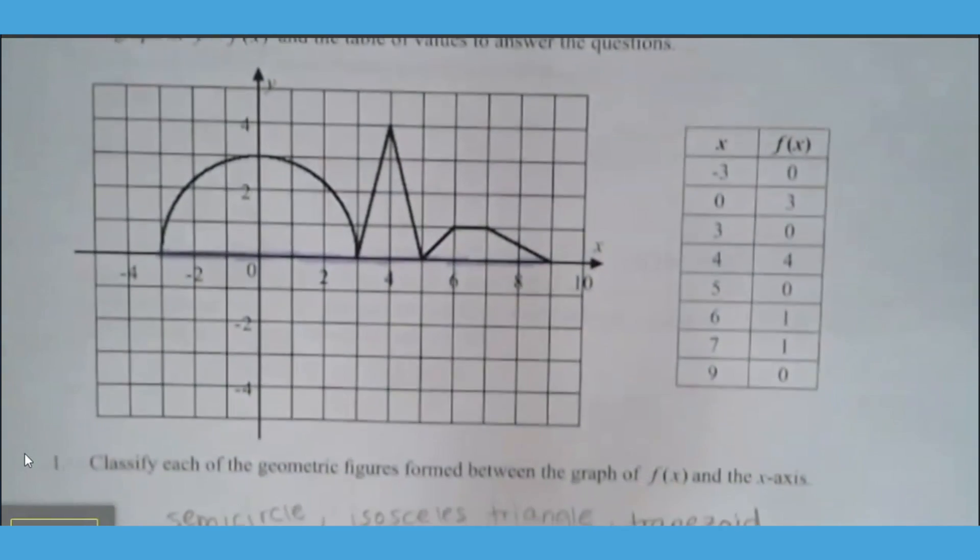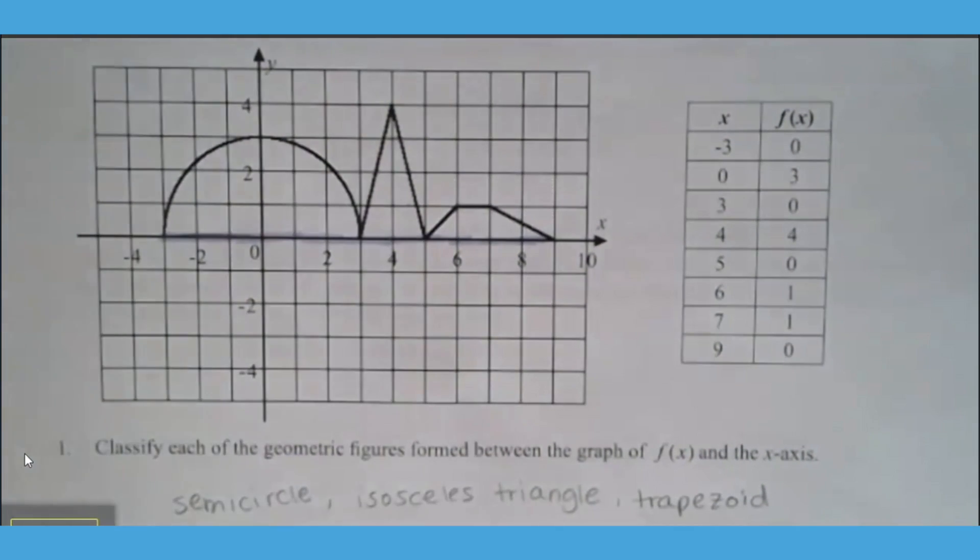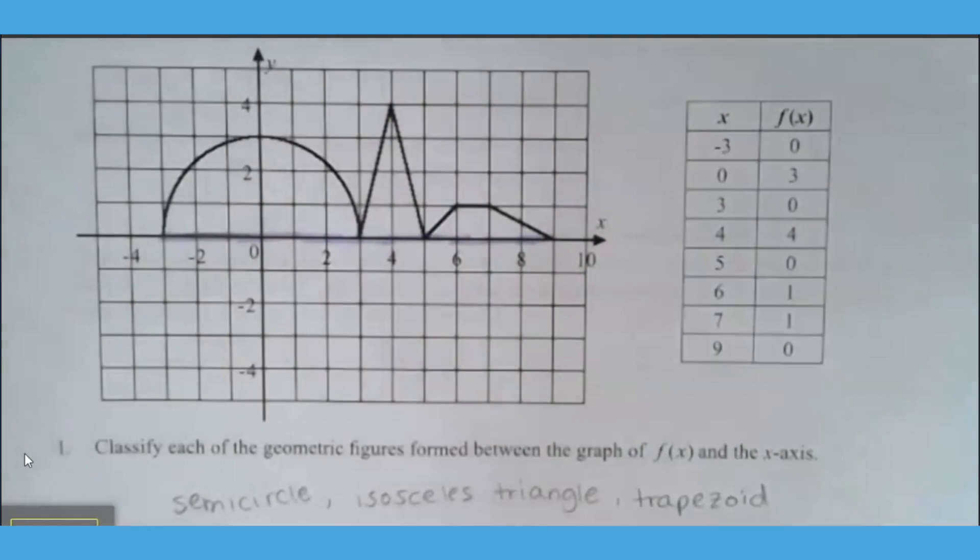So our first question that we want to talk about is, let's classify what each of these figures are. We have a semicircle, an isosceles triangle, and a trapezoid. I generally ask my students to do those first five problems. We pause.